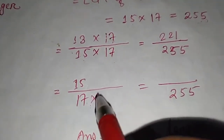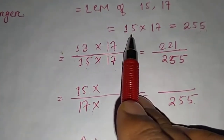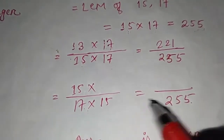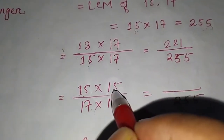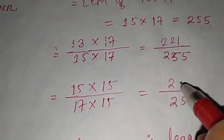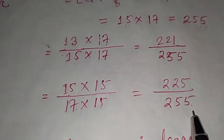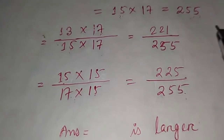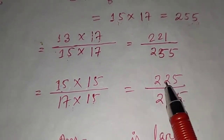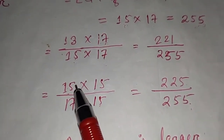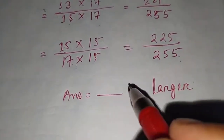For 15/17: multiply by 15 to get denominator 255; numerator becomes 15 × 15 = 225. Now denominators are both 255. Comparing numerators: 221 vs 225 — 225 is bigger, so 15/17 is the larger fraction.